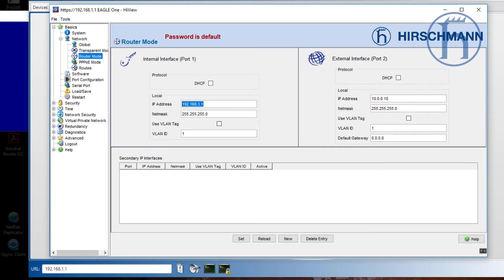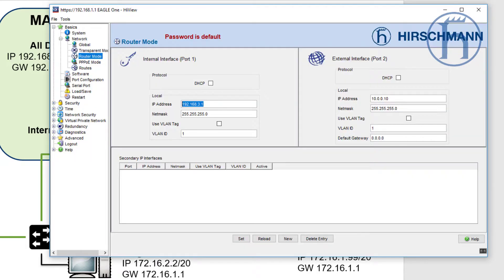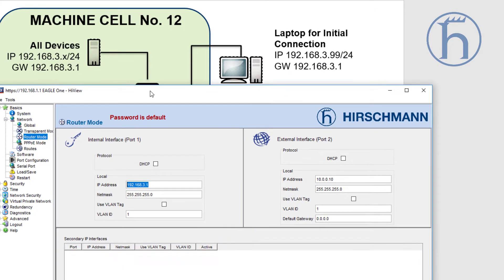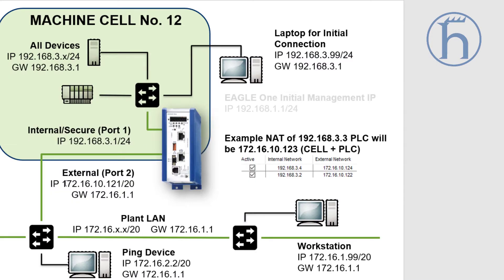It gives me a default of 192.168.3.1, which happens to coincide with what we're planning on doing here. In this plant, we have 20 machine cells, and all of them have a 192.168.3 address, which coincides very nicely with what we need. We then have an external interface, and for the external interface, I'm looking for one that will allow us to communicate with the plant, which is on a 172.16 network with a 20-bit subnet.